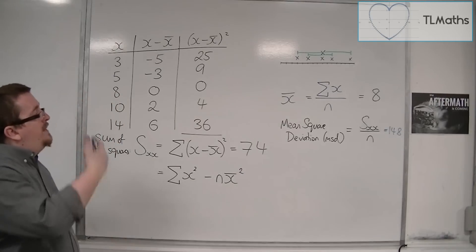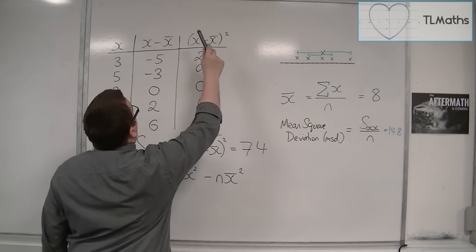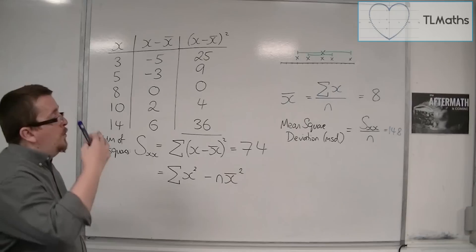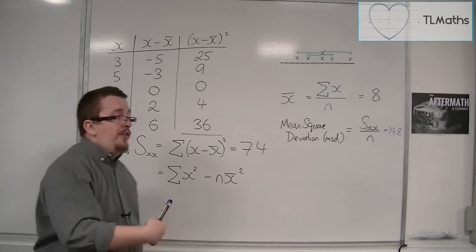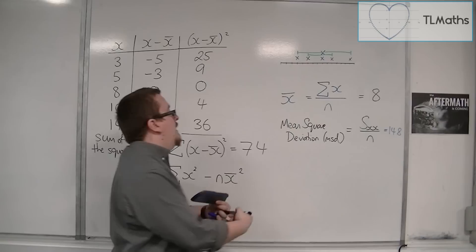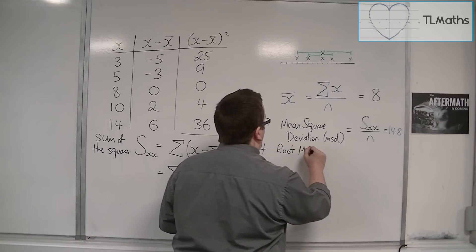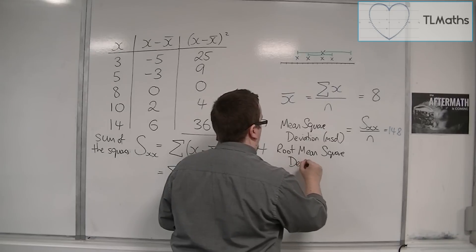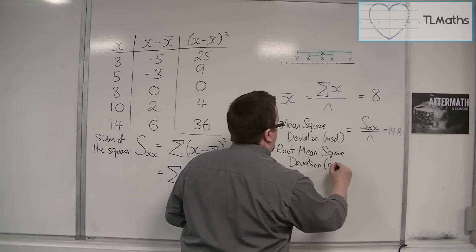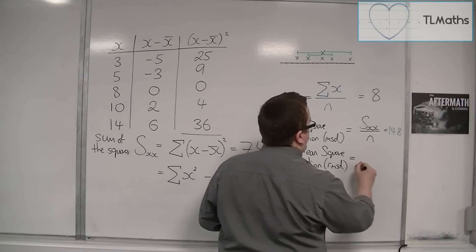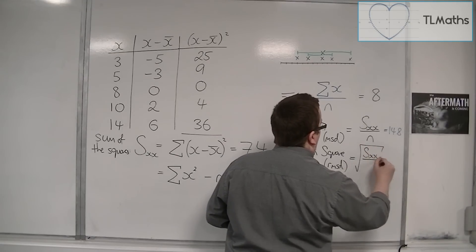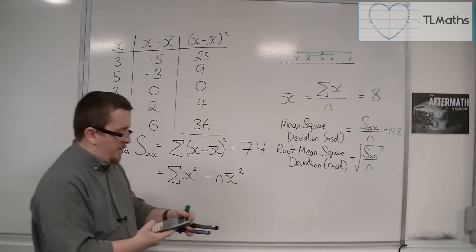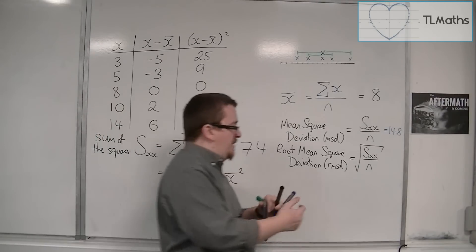It's only because of this process here, where I squared each of the numbers, that made those numbers a lot larger. So, in order to reverse the process, we need to square root. And that's where the root mean square deviation comes in. Otherwise referred to as the RMSD. So this is the square root of the mean square deviation. So if I now square root that answer, we actually get 3.85 to two decimal places.